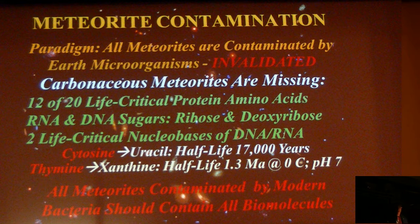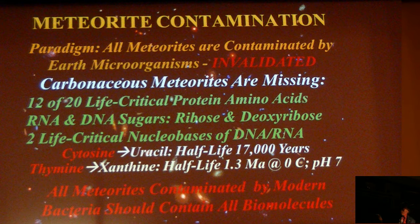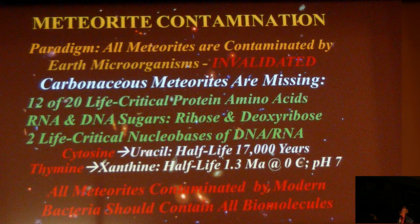The paradigm has been that all meteorites are contaminated — that paradigm is absolutely invalid. If these meteorites were contaminated, you should see the sugars ribose and deoxyribose, all of the protein amino acids, and cytosine and thymine — but those are missing. Cytosine converts to uracil, and thymine converts to xanthine with a 1.3 million year half-life.